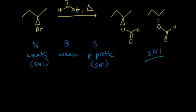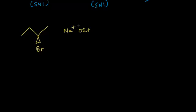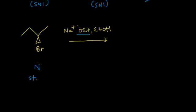Let's look at the same starting material again — the chirality center with the bromine — and this time react it with sodium ethoxide in ethanol as solvent. The ethoxide anion is our nucleophile; it's an alkoxide, so we know it's a strong nucleophile. Strong nucleophiles make me think it could be an SN2 mechanism.